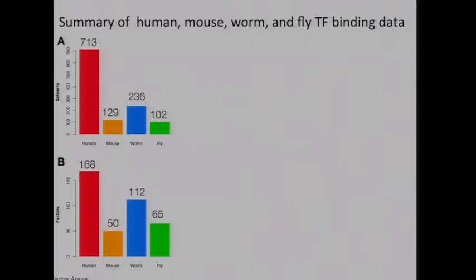Let's start with the data sets. There are really a lot of data sets out there for transcription factor binding. Since humans have been studied the most, they have the most — 700 different data sets. For worm, there's 236; for flies, 102, plus a lot of chromatin data sets. For mouse there are quite a few as well. These represent a number of different transcription factors, generally 50 to 168.